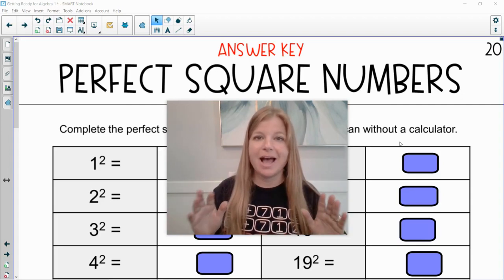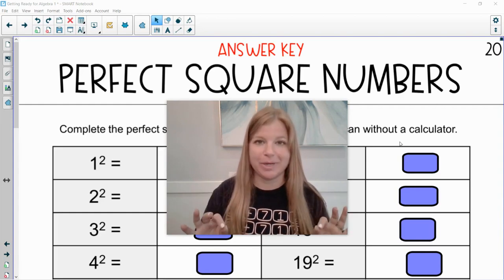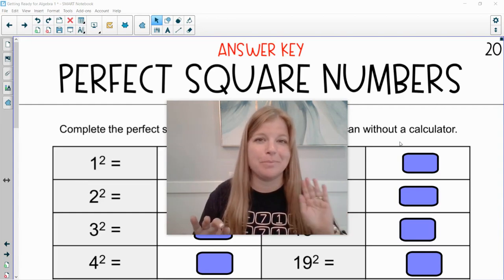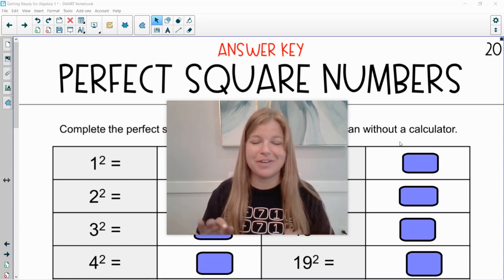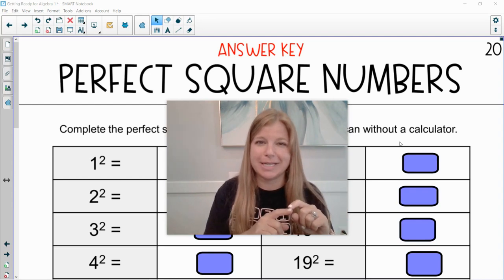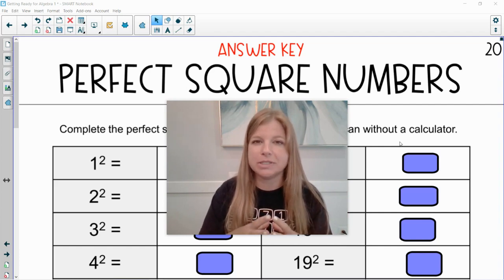Perfect square numbers. I cannot stress how important it is to know your perfect squares. Definitely 1 through 12 we should know those. That's from way back in your multiplication fact days. Remember the chart you thought like after 12 times 12 the world stopped, like 144 was the biggest, but there's so many more and so I encourage my students in my class to know the first 25 perfect squares.